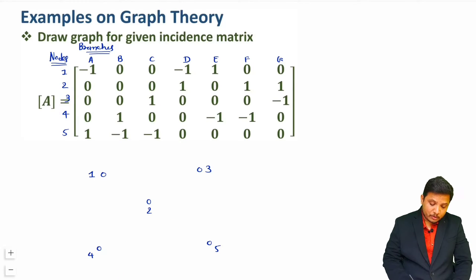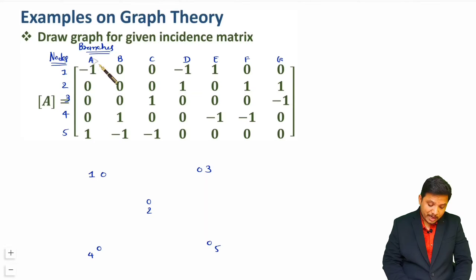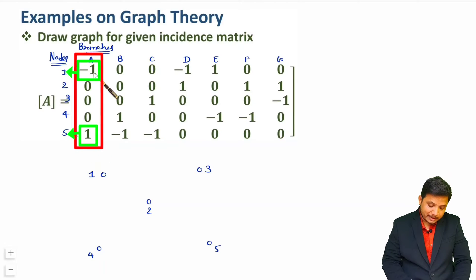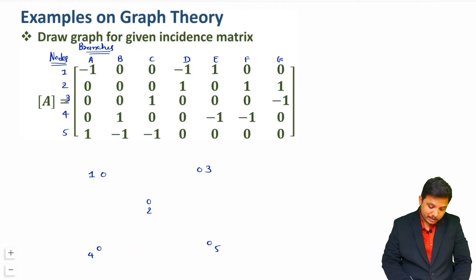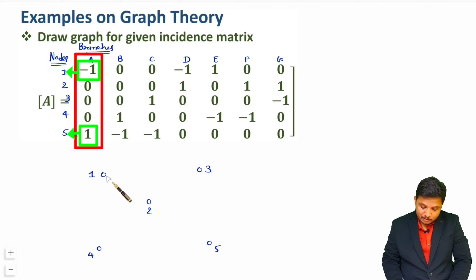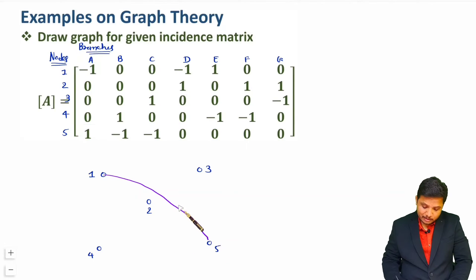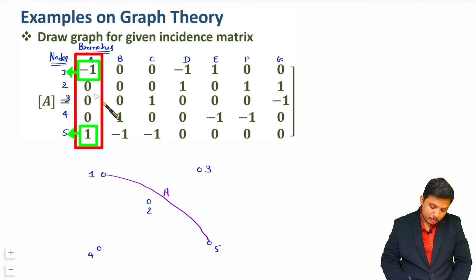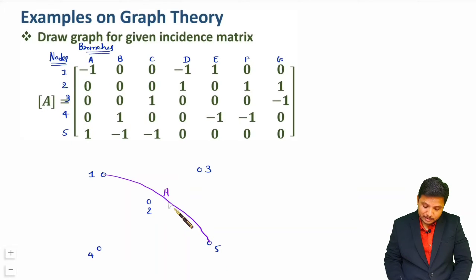Whenever you want to draw the graph, all you need to do is see the branch-wise connection vertically. Branch A, as per node 1 and node 5, is having minus 1 and plus 1. So branch A is connected between nodes 1 and 5. The direction is from plus to minus, and node 5 is having plus, so the direction is from 5 to 1.